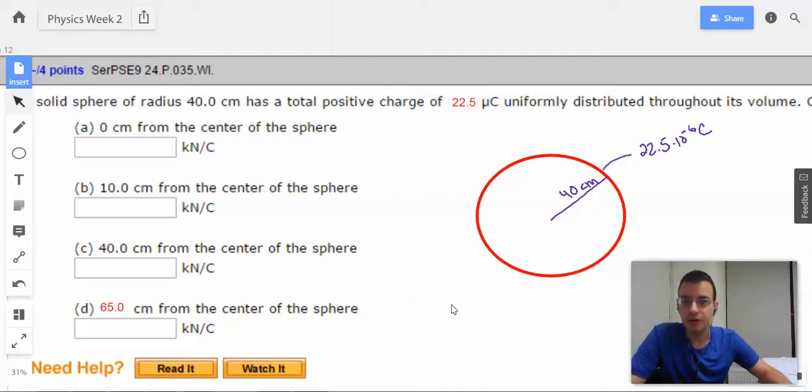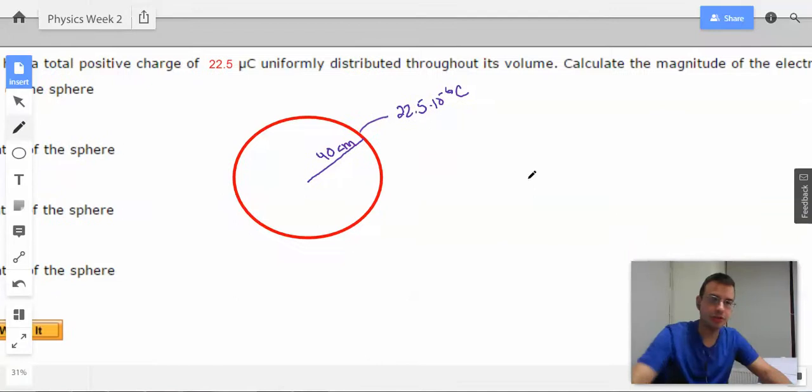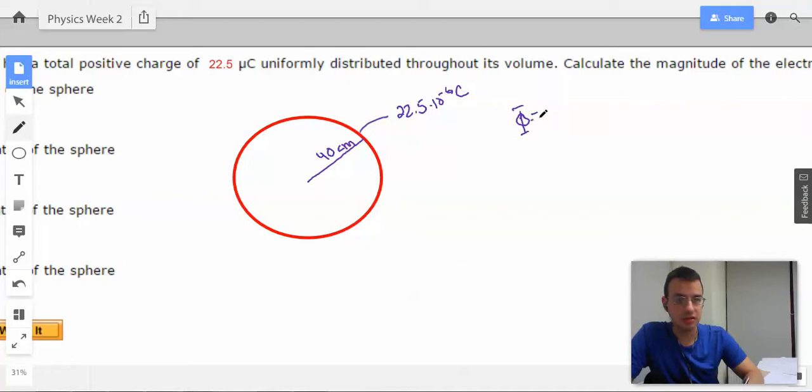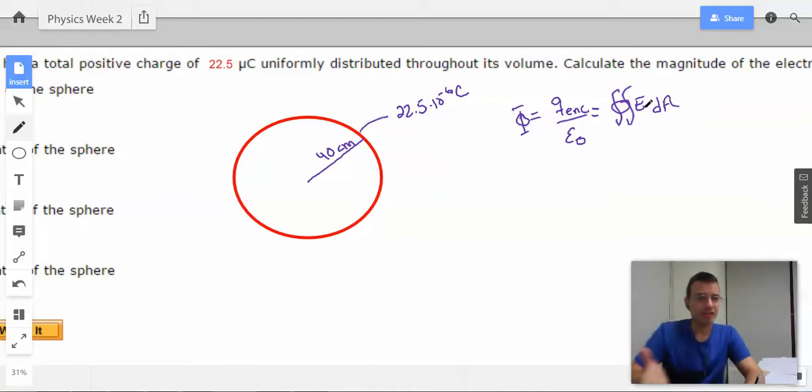So we're going to calculate the electric field zero centimeters from the center of the sphere. We are going to rely on Gauss's law for this. So we have flux equals q enclosed over epsilon naught, which equals a surface integral of E dot dA. I know you guys should probably jump to the conclusion at this point, but I always think it's better just to write out the whole formula. It helps keep me focused.